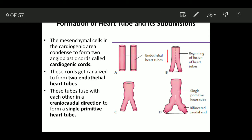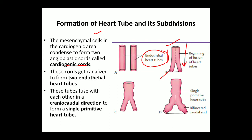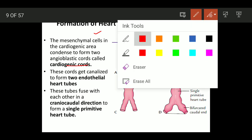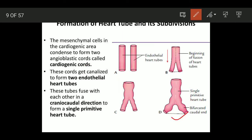Now, formation of the heart tube and its subdivisions. In the cardiogenic area, mesenchymal cells condense and form the cardiogenic cords. Two cardiogenic cords are formed and they canalize to form the endothelial heart tubes. These two endothelial heart tubes fuse craniocaudally from cranial to caudal, but the caudal end remains unfused — so there is a bifurcated caudal end — and a primitive single heart tube is formed.